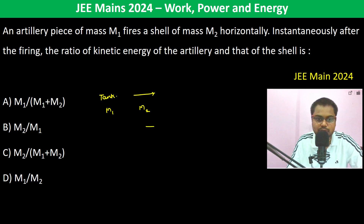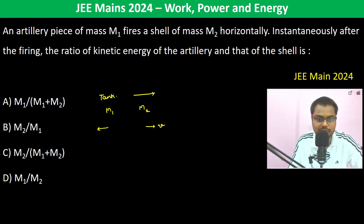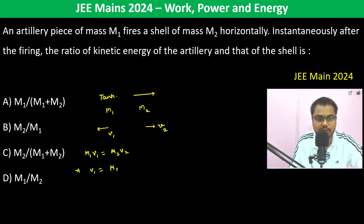Let us say the shell goes with velocity V2 and the artillery recoils with velocity V1. Momentum has to be conserved, so M1·V1 should be equal to M2·V2. Therefore, V1 is equal to M2·V2 divided by M1.